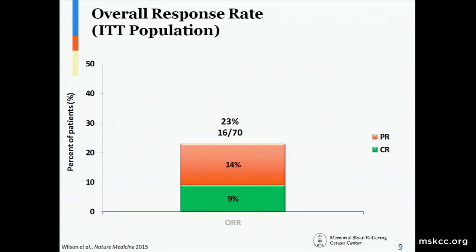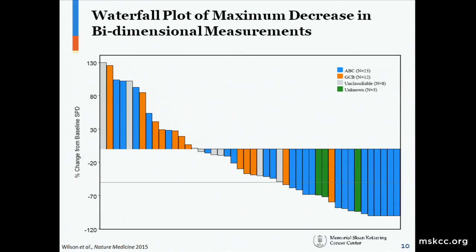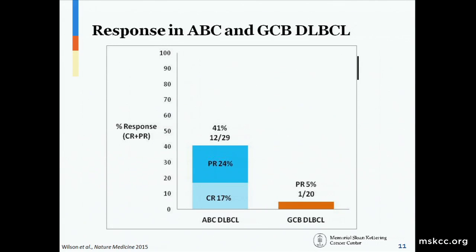When we and the NIH led the phase 2 trial of ibrutinib in DLBCL, it wasn't a very exciting response rate overall. But when you looked at the subtypes of patients in the trial, almost all of the responses were seen in patients with the ABC subtype, shown here in blue bars, and most of the non-responders clustered with patients in the GCB subtype. This was all done by genetic profiling, not by the Hans algorithm, and looking at it that way in the bar graph, there was a 40% response rate in the ABC subtype as opposed to the GCB subtype.